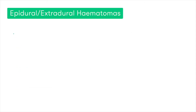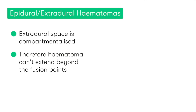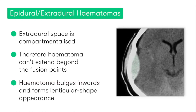Interestingly, the anatomy of the extradural space, and the fact that the dura mater actually fuses with the sutures of the skull, means that the space is compartmentalised. Therefore, as the hematoma develops, it can't extend beyond these fusion points. This means that the hematoma actually bulges inwards, and we get a characteristic lenticular shape appearance on the CT scan.